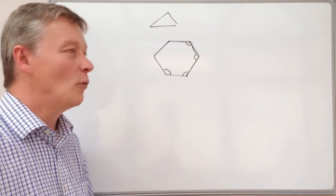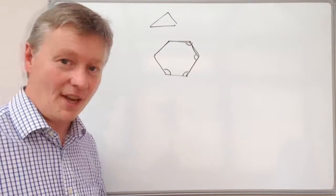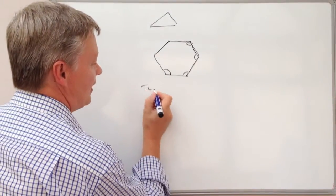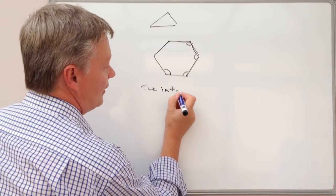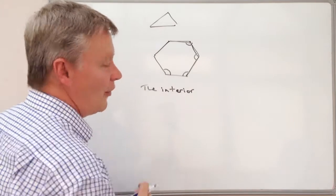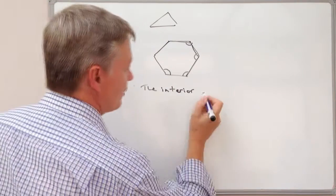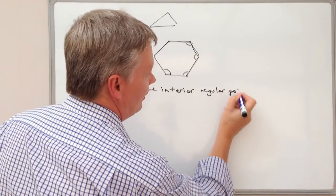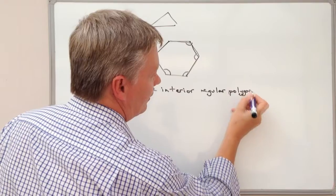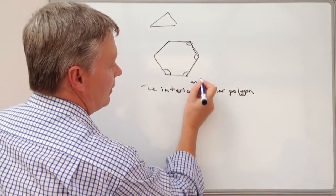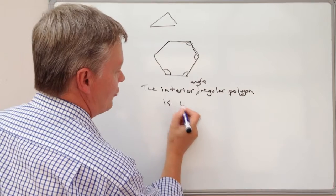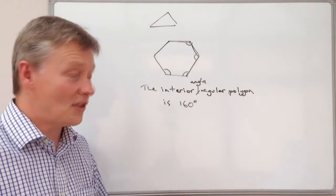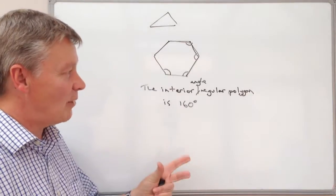So it gives us a little bit of a clue with a fairly typical exam question which might be something like the interior angle of a regular polygon is 160 degrees. And what they want to know is how many sides that shape has.